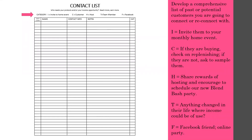Here's the contact list. Print out multiple copies and start writing. Consider how you know them and where they best fit in your plan. Some may be Facebook party hosts because they live far; others may be great prospects to join your team. Some may fit into multiple categories, but begin categorizing them somewhere and see where it goes.